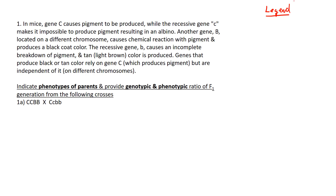This is a very popular question about mice. It says in mice, gene C causes a pigment to be produced, while the recessive gene little c makes it impossible to produce a pigment, resulting in an albino. So capital C gives pigment — we don't know what color yet because this is polygenic and will be influenced by another gene — but if I have little c's, I don't care what other genes I have; this always gives me an albino.